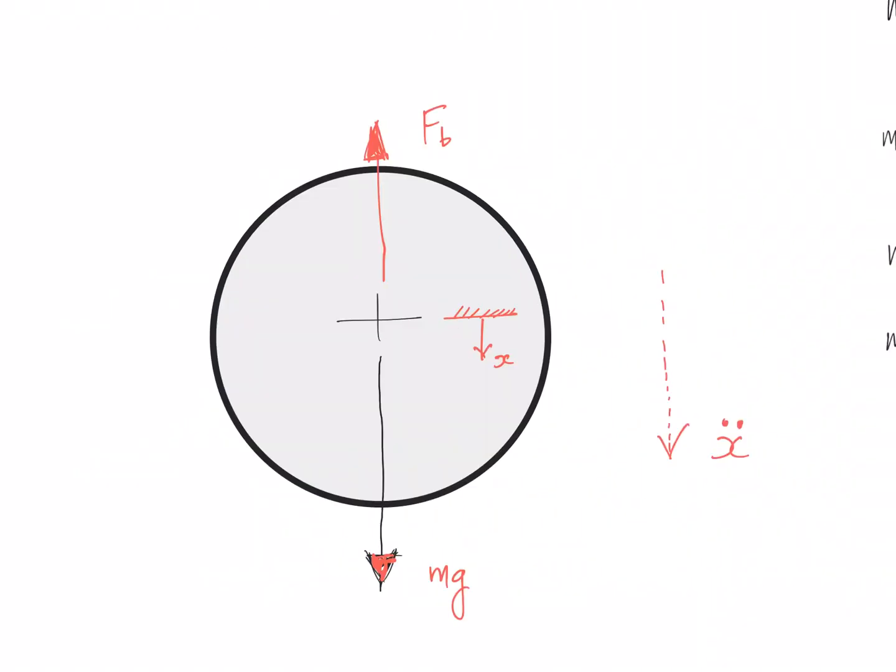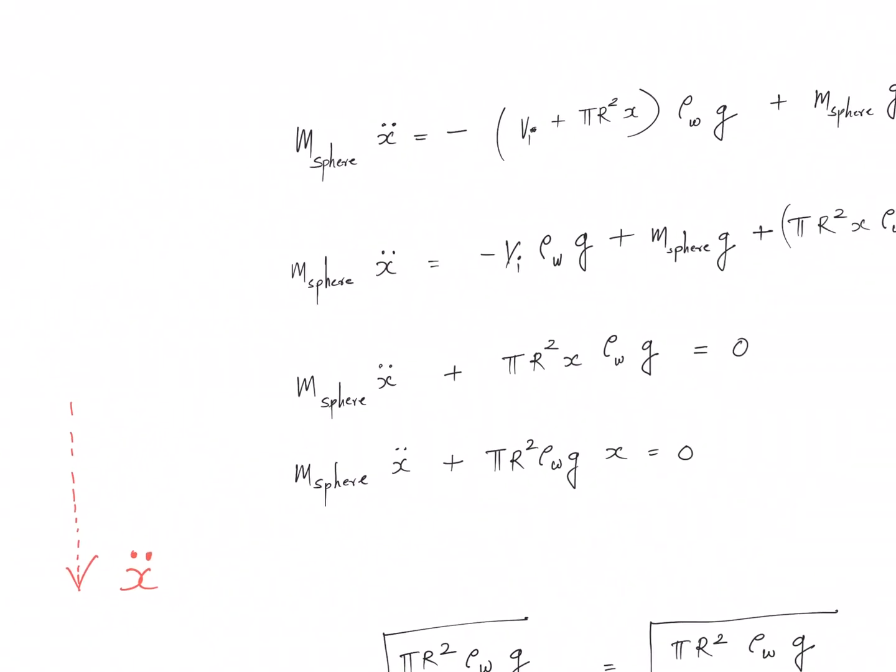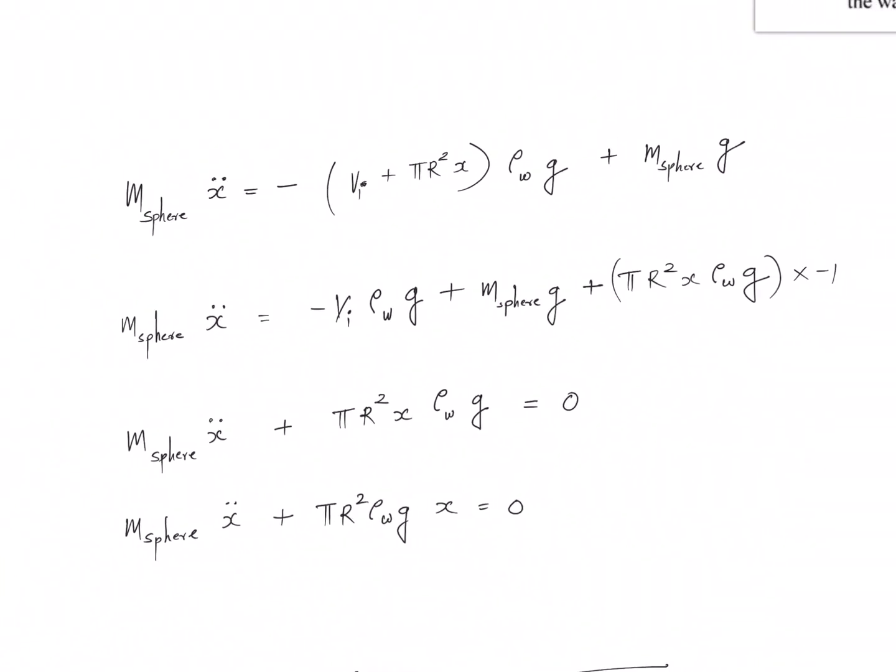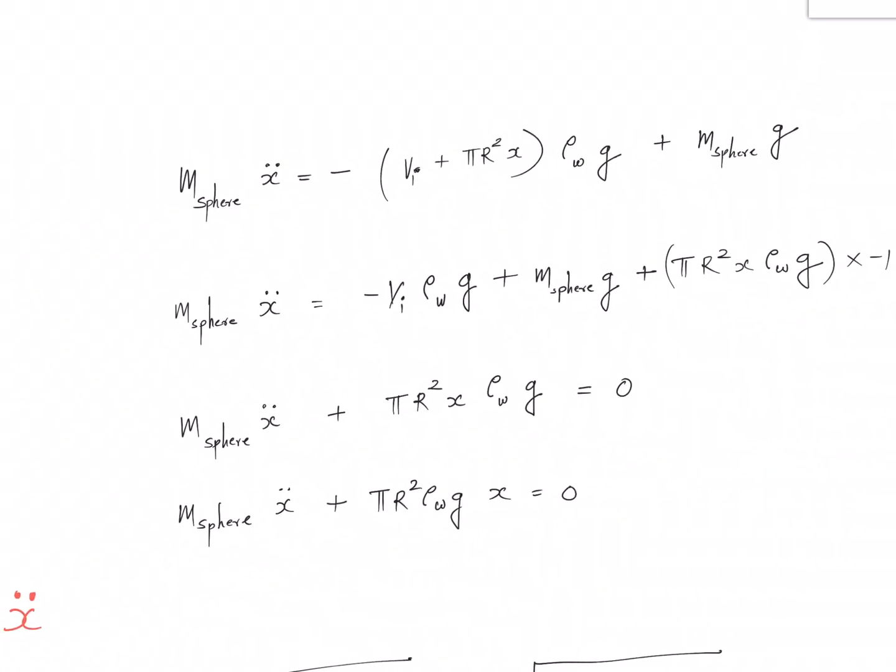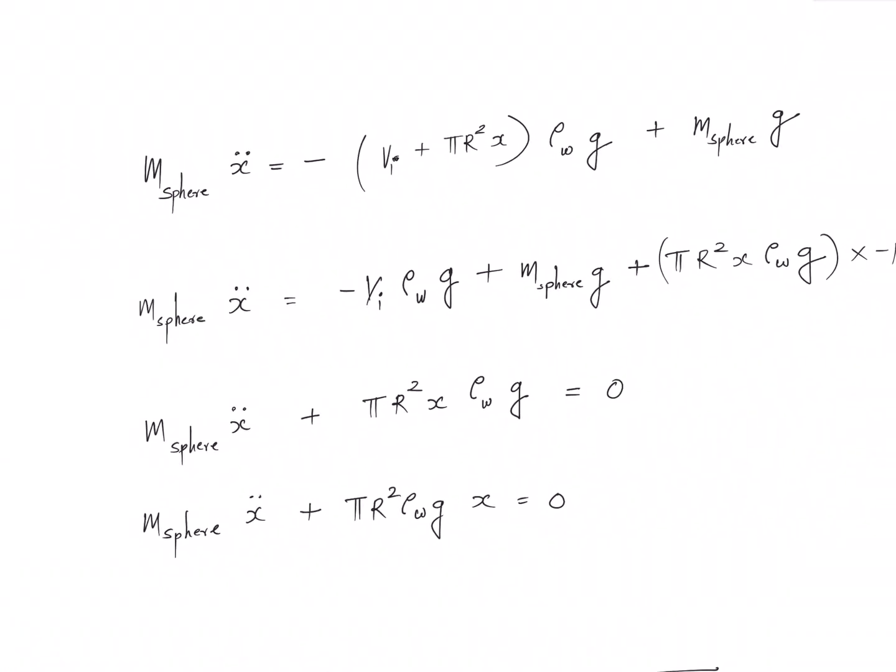This was our free body diagram. Now this buoyancy force is increased from that of the initial value. Let's write Newton's second law for this free body diagram. It may appear a bit lengthy, but I will break it down for you. This is mass of the sphere times the acceleration, equal to the buoyancy force minus the weight.